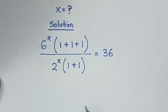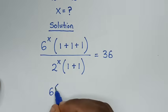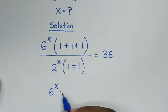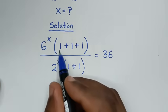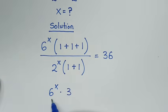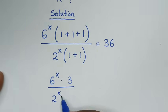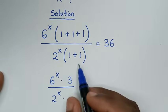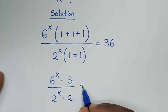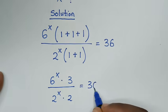Then in the next step, it will be 6 power x times 1 plus 1 plus 1, which is 3, then over 2 power x times 1 plus 1, which is 2, is equal to 36.